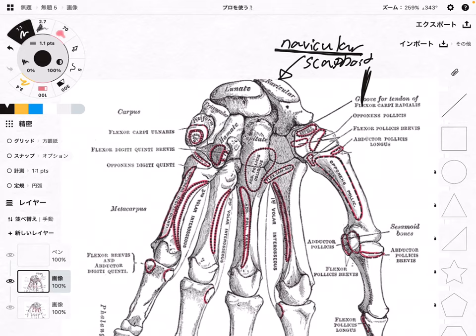Next to the navicular, this bone is the lunate, because its shape is like the moon.